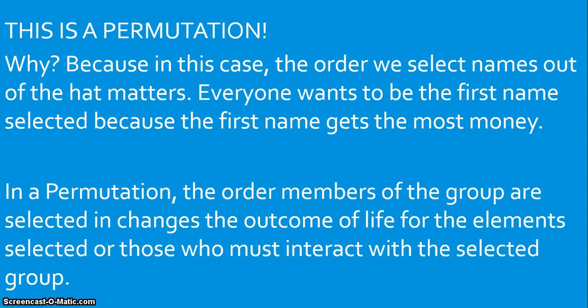This is a permutation. It's a permutation because the order in which we select the names out of the hat matters, right? Because only the first name gets the $1,000. The second name gets less, and the third name gets even less. If you were in Ted's class, if you were a student in this situation, you would want to be the first student called because you would get the most money. And so, in this case, the order in which we're selecting these students matters. Because ultimately, only the first student called gets the $1,000. And so really, because that order matters, because it's important, we have to use the permutation formula.